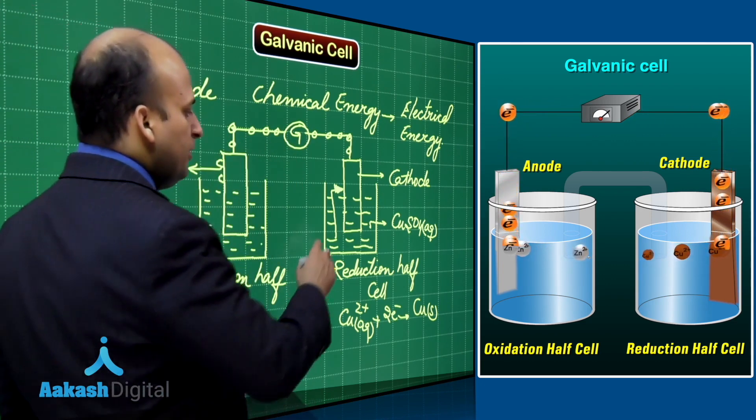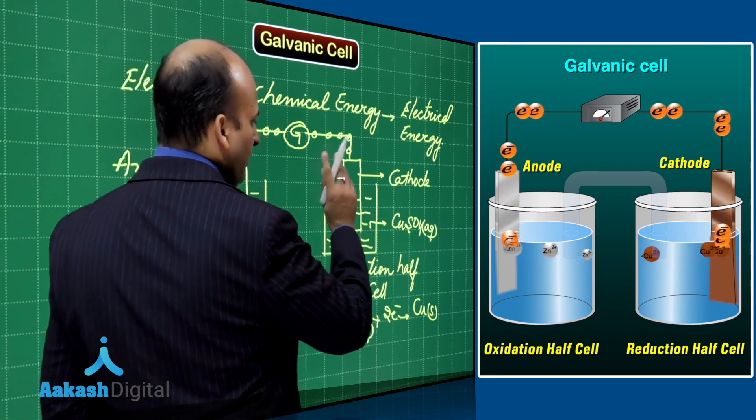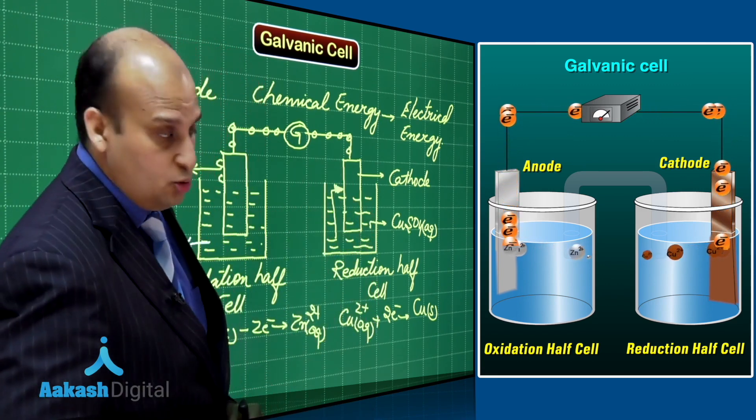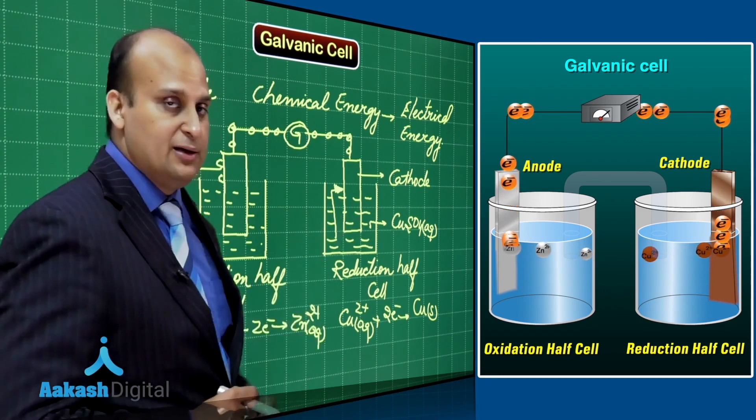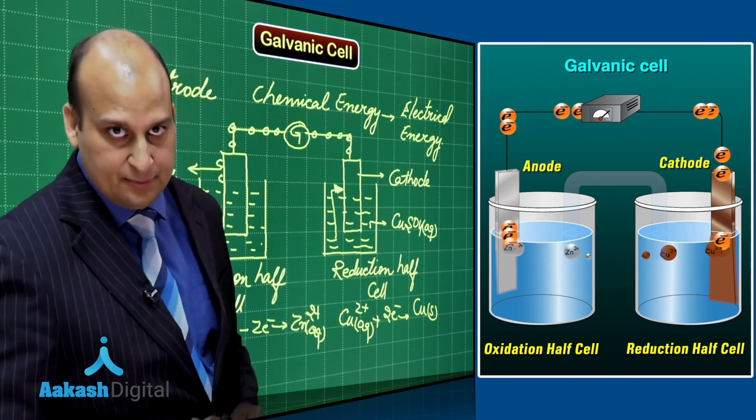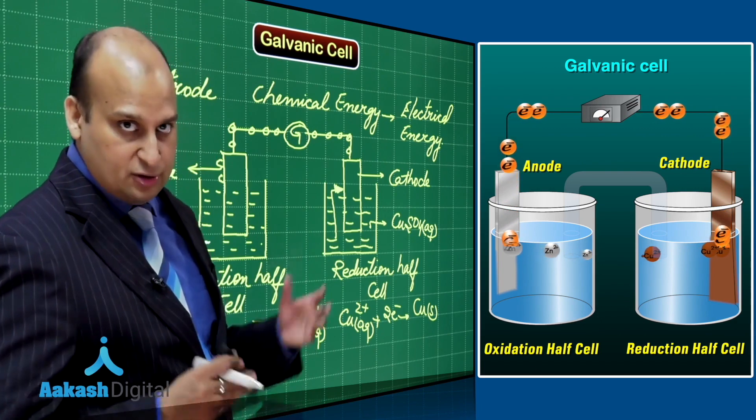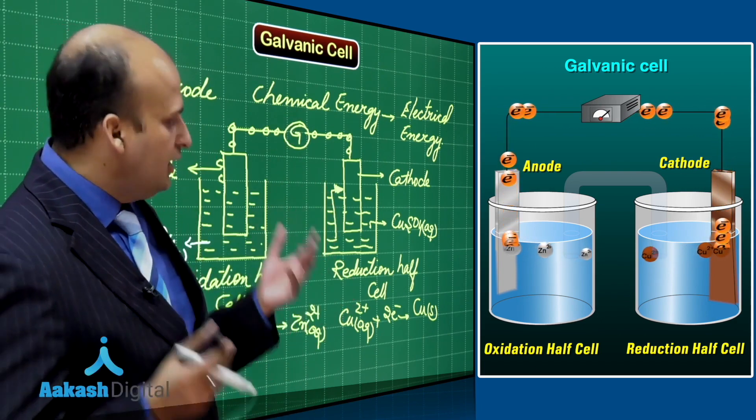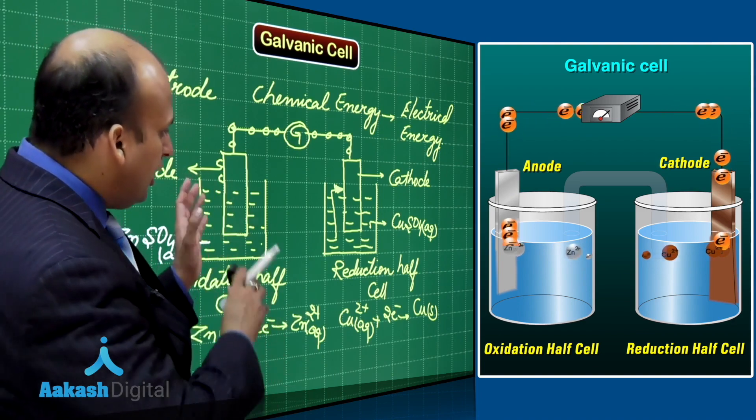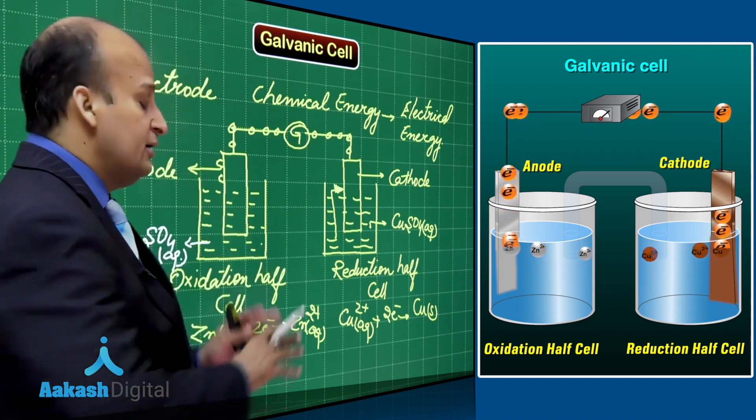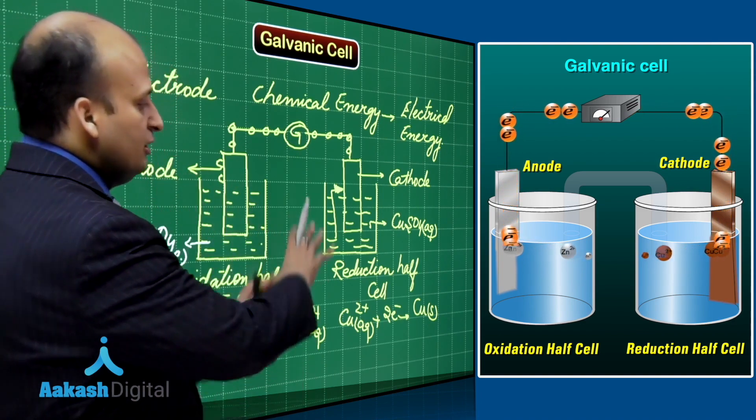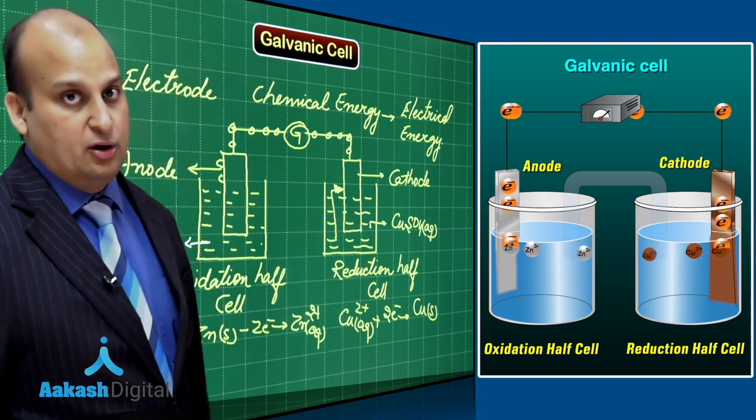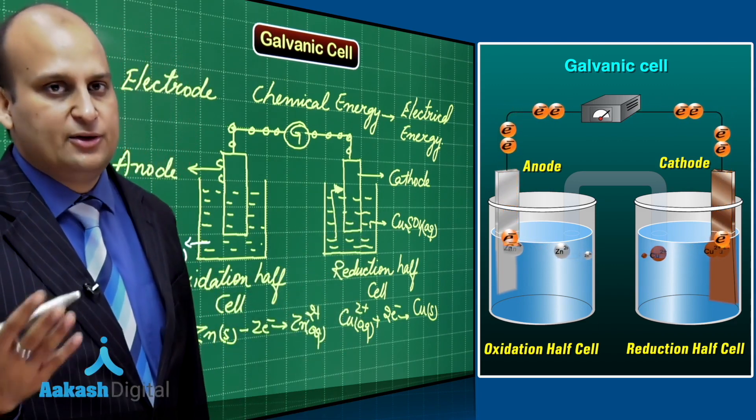Similarly, when Cu²⁺ ion keeps on going and getting deposited on the cathode, what will happen? The solution will contain SO₄²⁻ ion. When the solution becomes negative because of the sulfate ion, will it allow the electrons to come? You will say, no, sir, it will not allow, exactly. So, how do we ensure that this solution remains neutral, this solution remains neutral or how do we maintain the electrical neutrality?